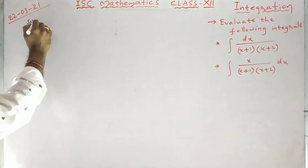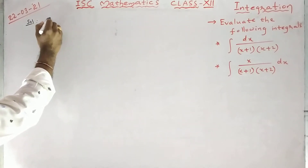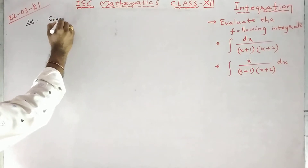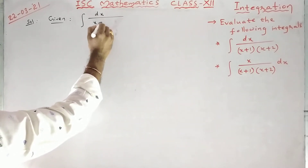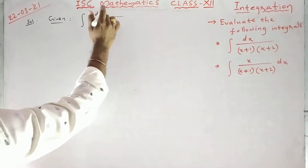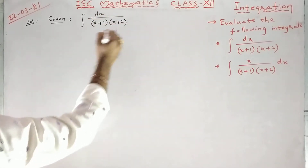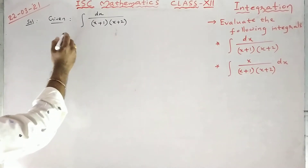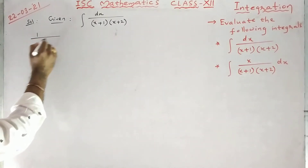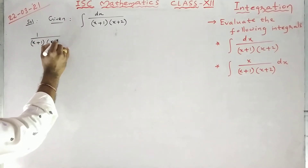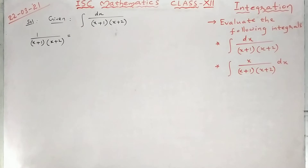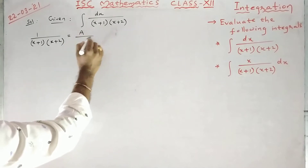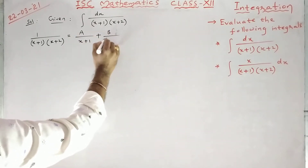Look at the first question. The given integral is dx upon (x+1)(x+2). So I am going to split into partial fractions. I am taking separately 1/(x+1) and 1/(x+2). Here the denominator has non-repeated linear factors. In this case, we take A/(x+1) plus B/(x+2). The constants we have to find.